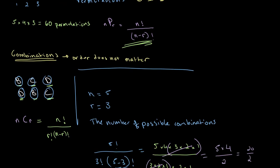So there are 10 different possible combinations of who sits in the chairs. When finding the number of possible combinations, it doesn't matter who sits in what chair. For example, having A, B, and C is one combination, and A, B, and D is a different combination — since C is not in our second combination, these are separate combinations.